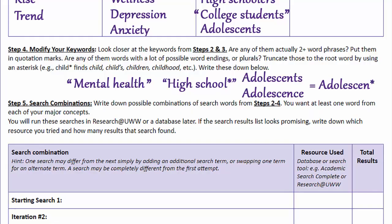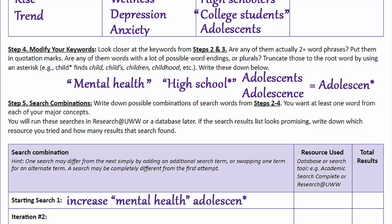Now you're much more prepared for your search — look how many more possible search words you have ready. In the bottom section, Search Combinations, choose at least one word or phrase from each of your columns in Steps 2 through 4. You want at least one word from each of your main ideas. Write out at least one initial search combination here. In the next one or two tutorials, you'll use and modify these search combinations in the actual databases. This is just a draft — you will probably want to try lots of different versions and tweaks once you actually start searching.